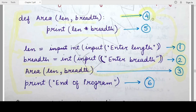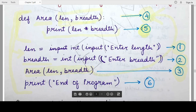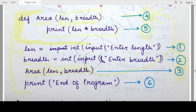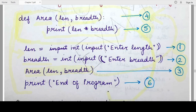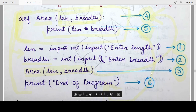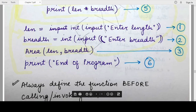The fourth step of function execution is that the arguments are assigned to the parameters length and breadth. The fifth step is to print the value of length multiplied by breadth. Since the function has terminated — even without a return statement, all statements of the function have completed — the flow of control gets transferred back to outside the function, to the line immediately following the function call. The program then executes the print statement that prints 'end of program'.